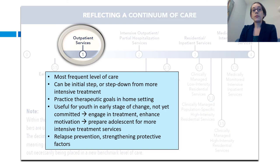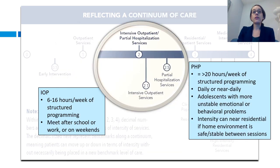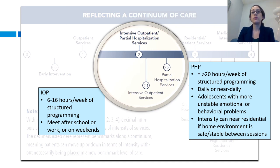During outpatient services you might also be working on relapse prevention and strengthening protective factors. The next level is intensive outpatient and partial hospital services, where youth are living at home but receiving intensive structured programming. Intensive outpatient, or IOP, is about 6 to 16 hours a week of programming, often after school or on weekends. Partial hospital is usually greater than 20 hours a week of daily or near-daily programming, which is helpful for adolescents with more unstable emotional or behavioral problems. If there's a stable structured home environment, this intensity can be very close to residential treatment if parents are also at home providing a lot of support.